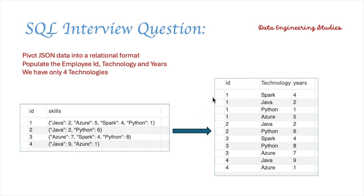We have to populate the employee ID, technology, and year in relational format. In this use case we are considering only four technologies: Java, Azure, Spark, and Python. I hope the question is clear. Now let's write the query to populate the data.